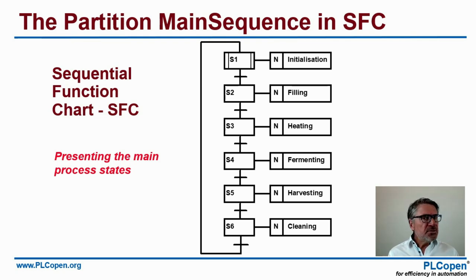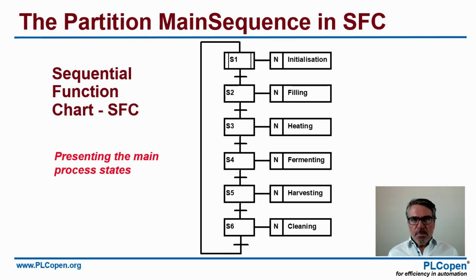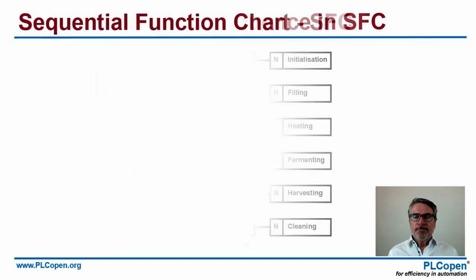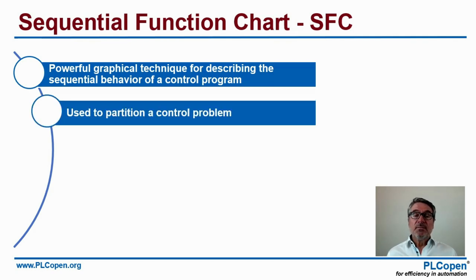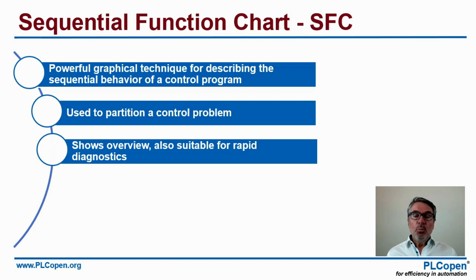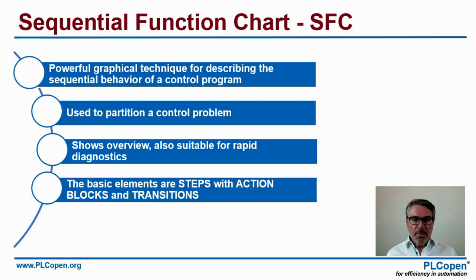The transitions are simple, and we have what we call self-documenting: we know where we are, and it's much easier for the operator to understand the process. Sequential Function Chart is a powerful graphical technique for describing the sequential behavior of a control program. We can partition the problem easily, it shows the overview, and it's suitable for rapid diagnostics — saving you time.